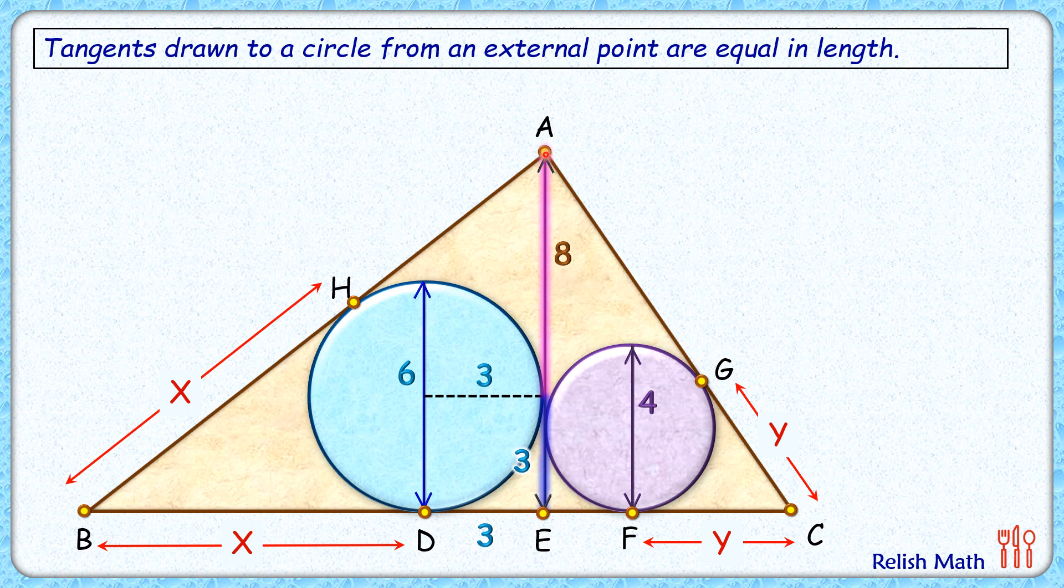But this pink length is a tangent from point A, and from an external point, the two tangents have to be equal in length. So AH will be the same, 5 cm, that is 8 minus 3.